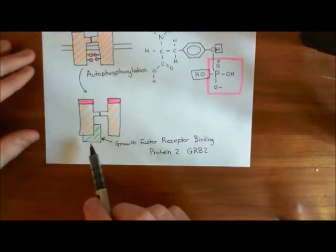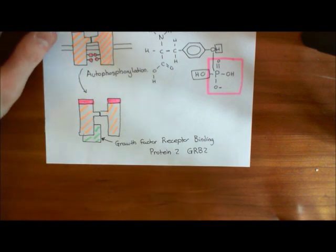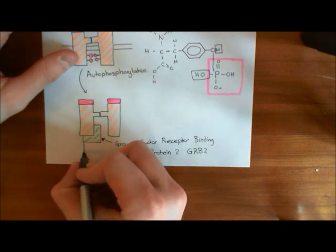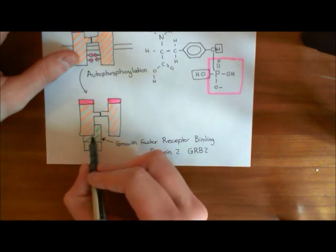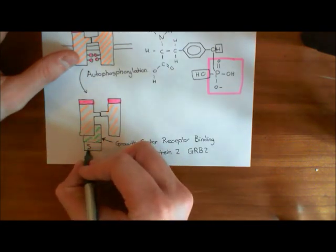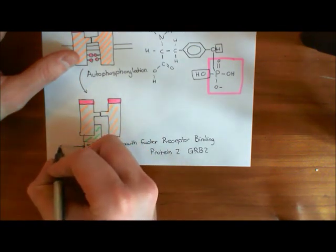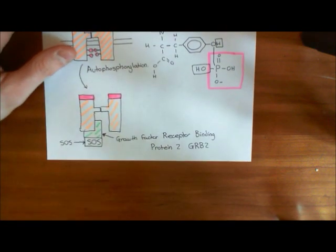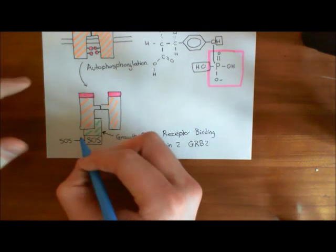When you've got phosphorylated tyrosine residues, growth factor receptor binding protein 2 (GRB2) can come and associate. The next step is another protein is going to bind to GRB2 once GRB2 has bound to the growth factor receptor. This protein is known as SOS.